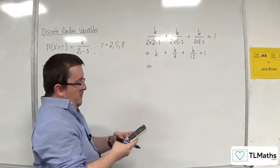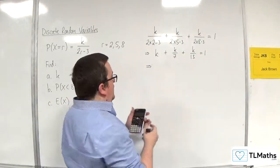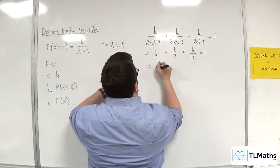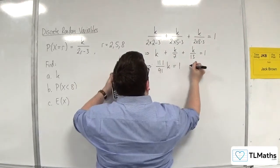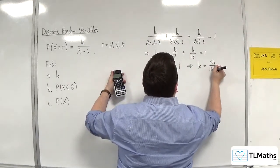So we've got 1 lot of k plus a 7th of k plus a 13th of k adds up to 1, 111 over 91 k equals 1. So k must be 91 over 111.